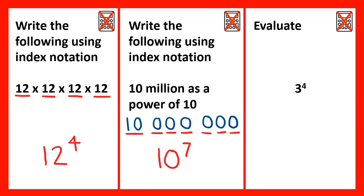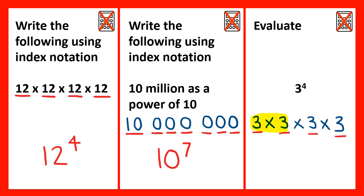Lastly, we need to evaluate 3 to the power of 4. Evaluate means to work out, so 3 to the power of 4 would be 3 multiplied by 3 multiplied by 3 multiplied by 3. 3 times 3 is 9, multiply that by 3 is 27, and multiply that by 3 again would be 81.